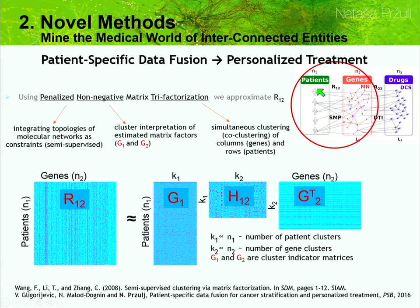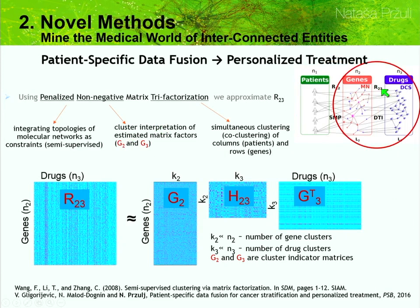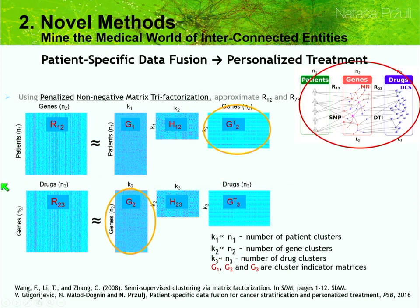For the somatic mutation profile matrix R12, we approximate it with three matrices: G1 times H12 times G2. G1 contains clusters of patients, G2 contains clusters of genes, and H12 is a compressed representation providing links between these clusters. We want this to be penalized to include topologies from all layers of data simultaneously — from molecular networks and drug chemical similarity — and of course non-negative for cluster interpretability. Similarly, the matrix R23 of drug-to-target interactions is approximated with three matrices. Putting it all together, we share the factor G2 across both factorizations, and this sharing ensures fusion of all the data.